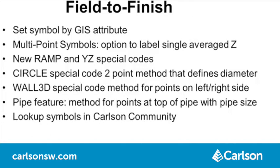FieldToFinish has many new features. For points with GIS attributes, there is a new ability to control the size, symbol, layer, and color based on the GIS values. For symbols sized by multiple points, there is a new option to label a single average elevation from these points. A new ramp special code makes FieldToFinish 3D curb polylines fit in a ramp using specified width and depth values, usable for driveways or sidewalk handicap ramps. The new YZ code is for yes elevation, to turn on the real Z elevation for points when a no elevation FieldToFinish code is used.